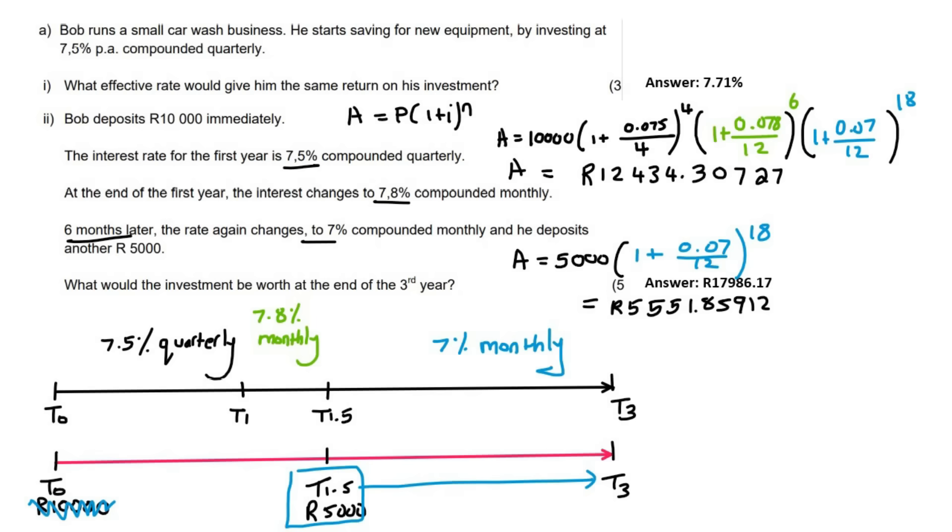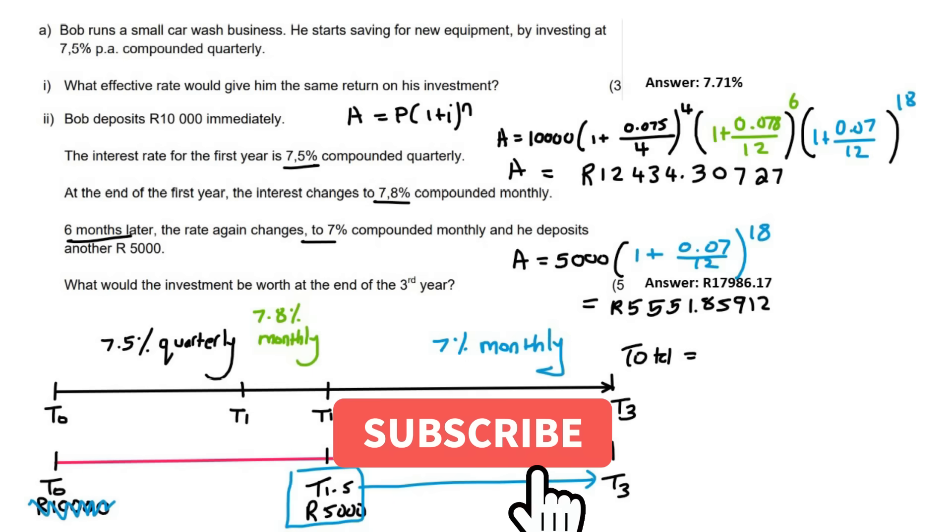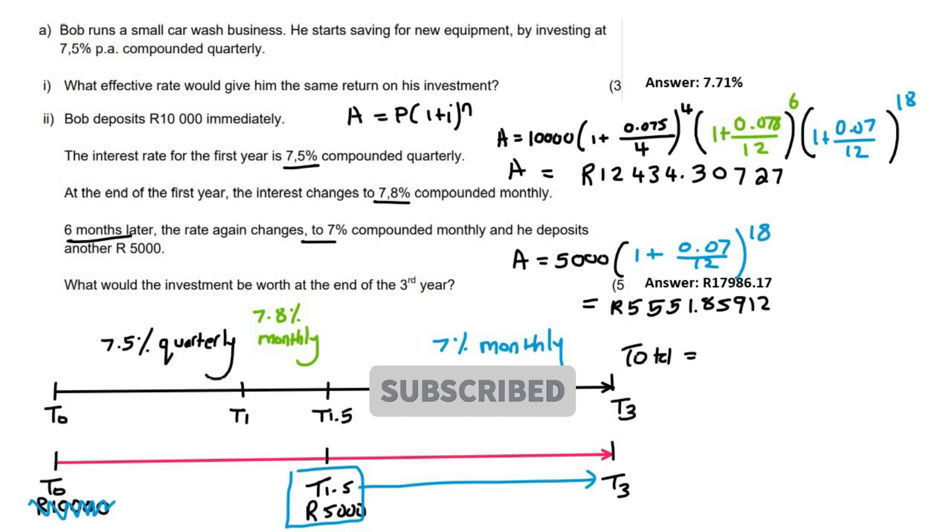And then, of course, we're just going to take these two answers and we're just going to add them together. So we can say total. And then we just add—I'm going to add those two numbers together. I'm not going to write it down just to save space, but I'm adding them both together. And that gives us 17,986.17.